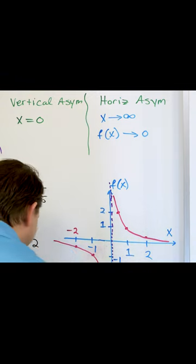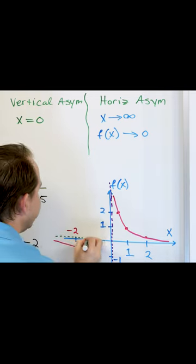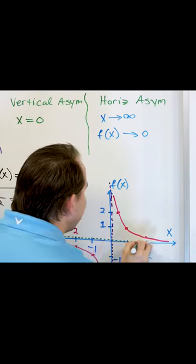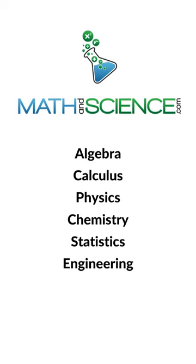And so we then say that this is now something special as well. We put a little dotted line here, which is hard because it's right on top of the axis, but this is called a horizontal asymptote. Learn anything at mathandscience.com.